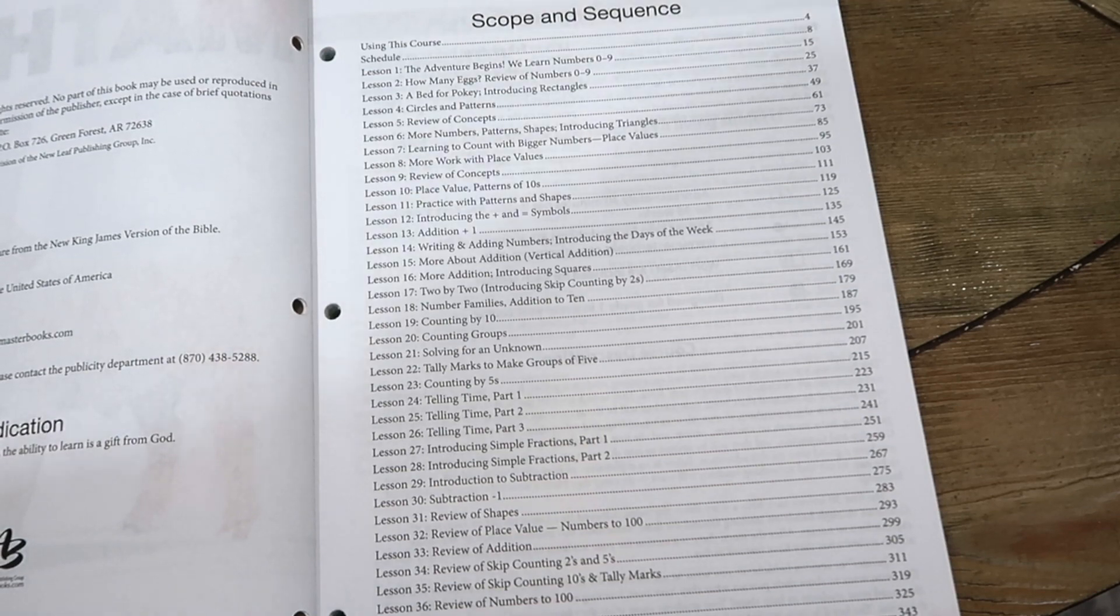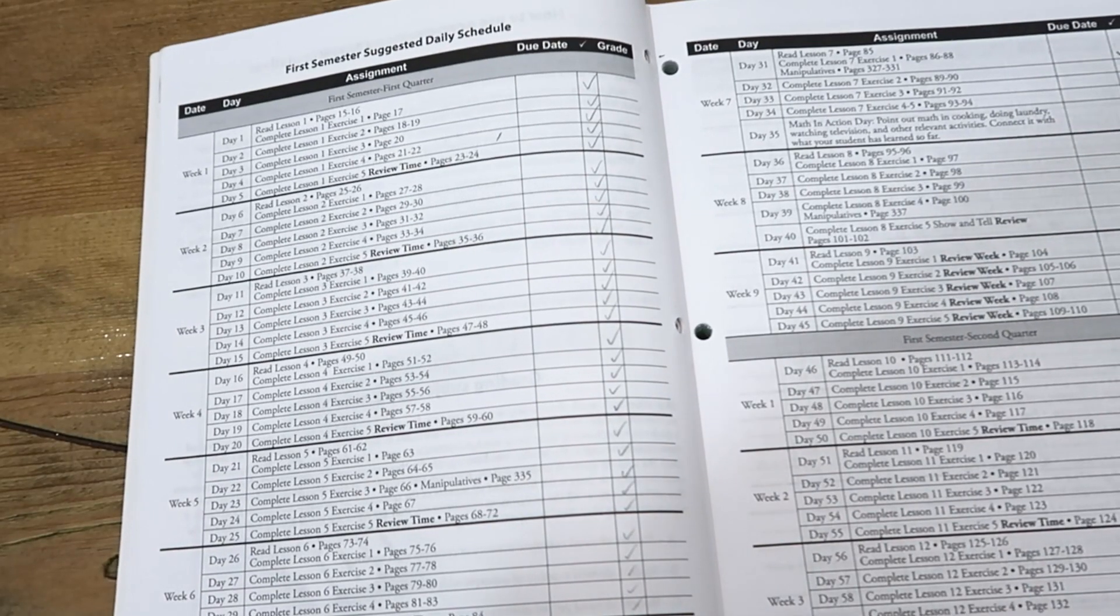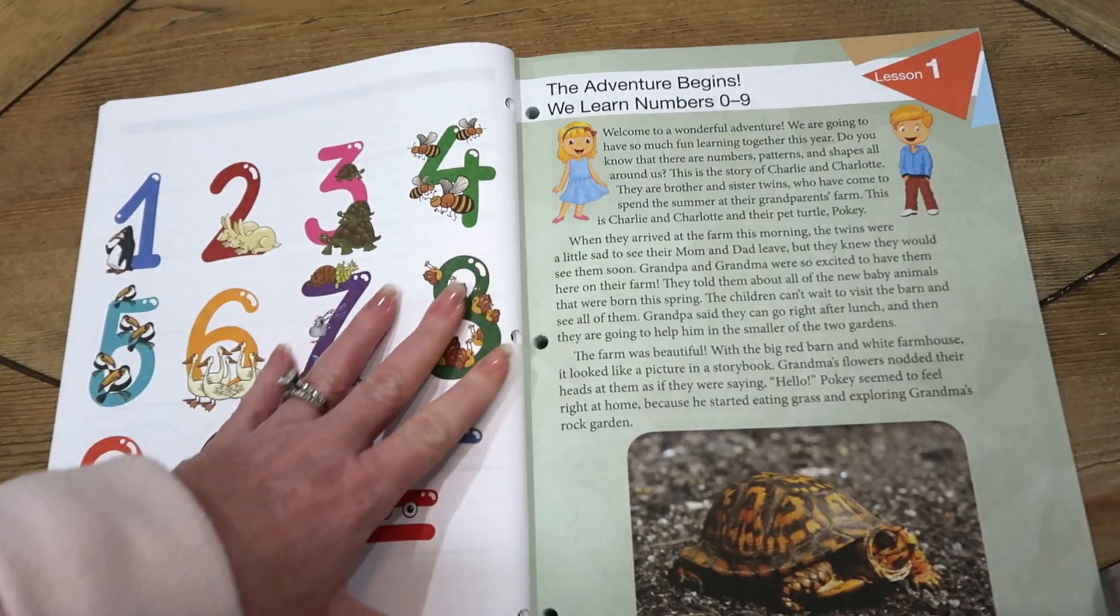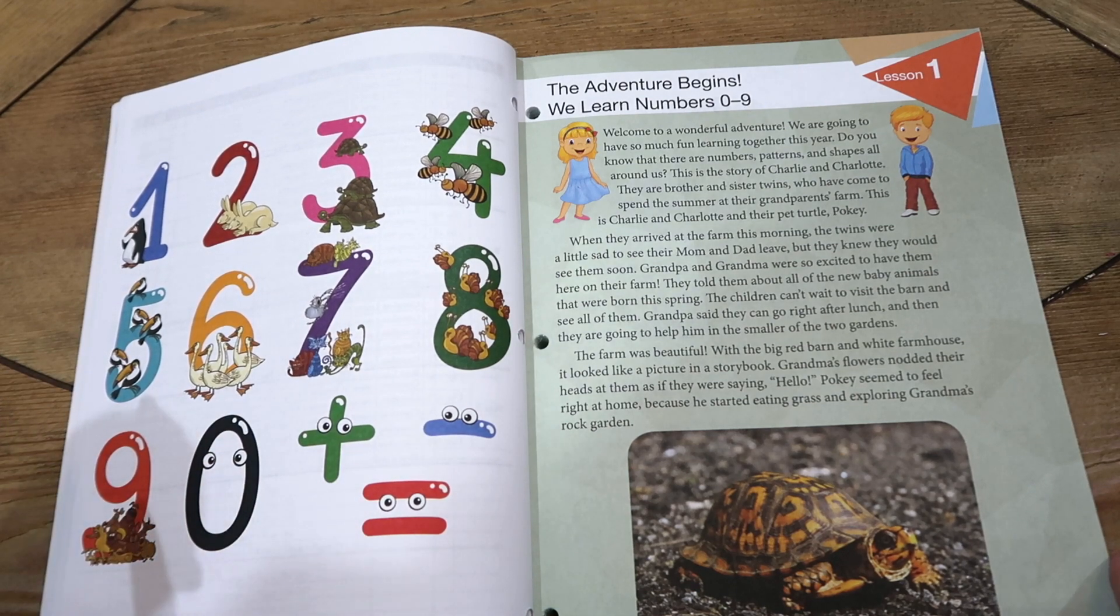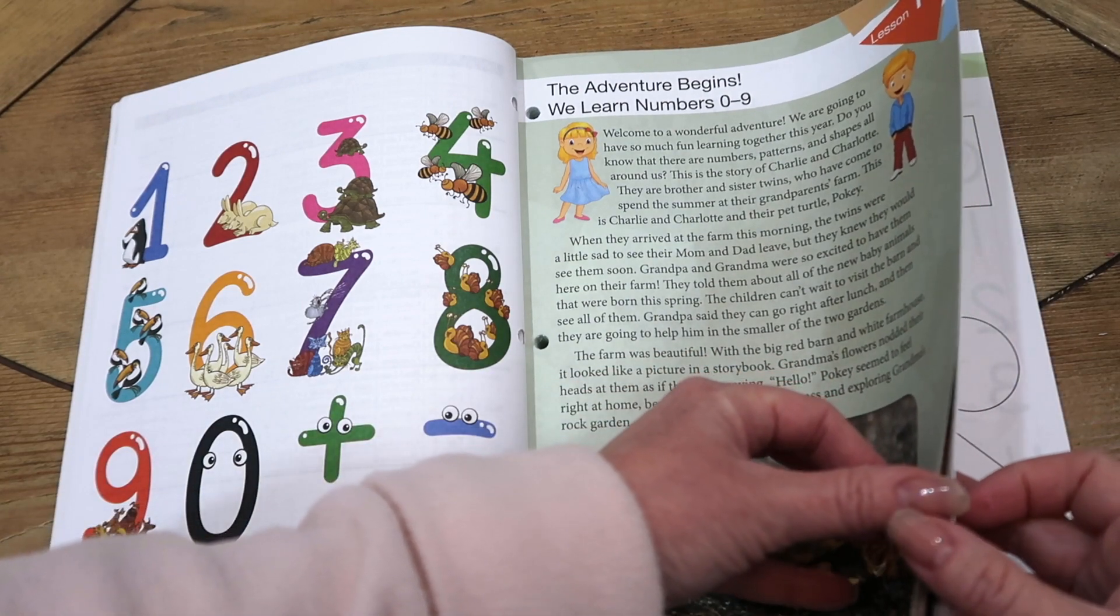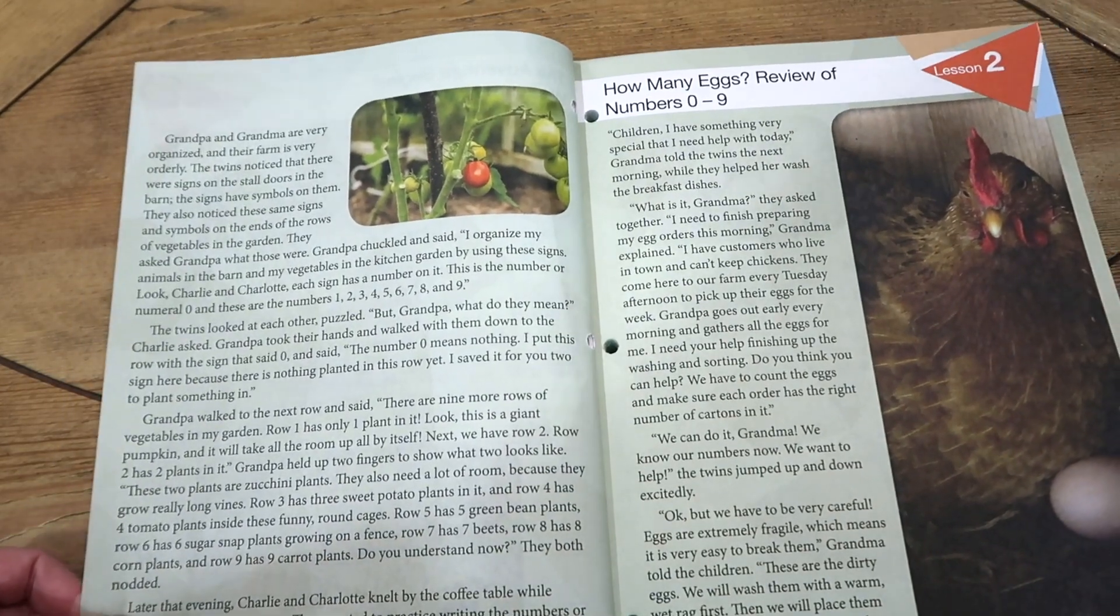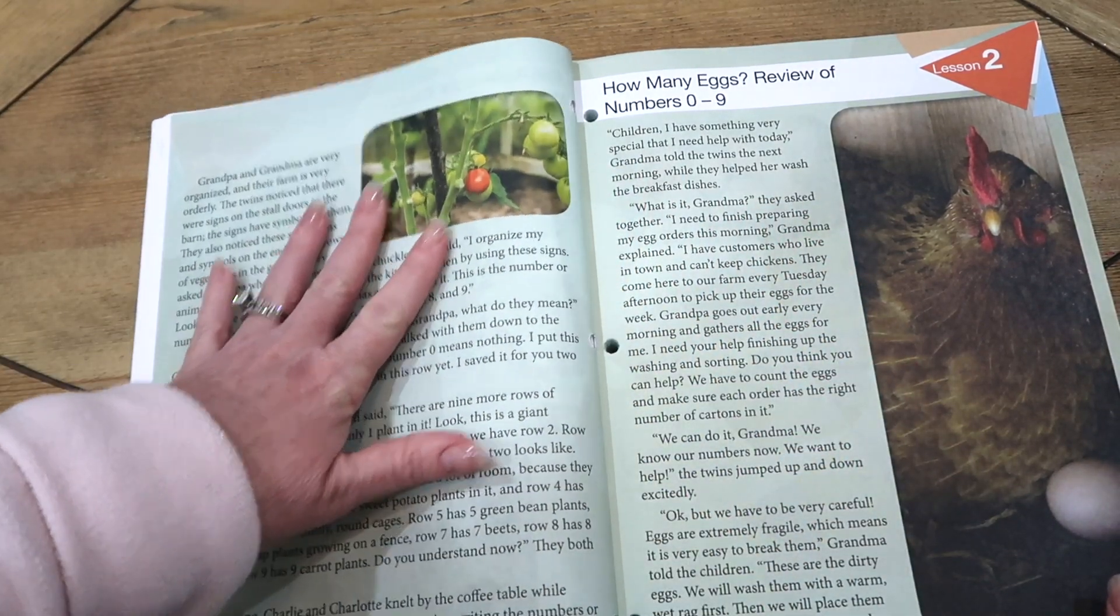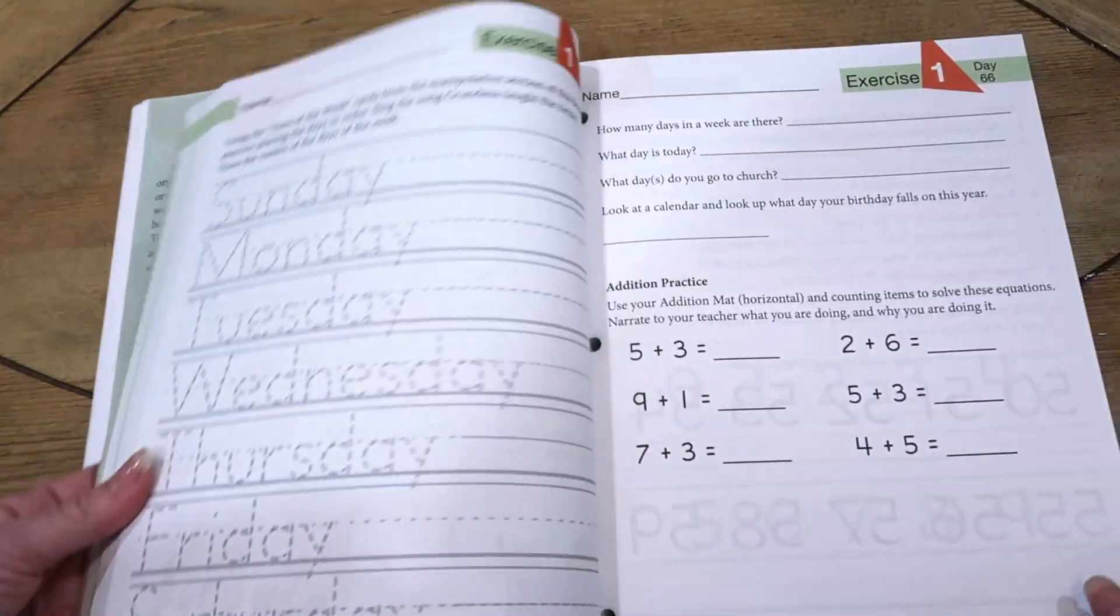That is the scope and sequence, including tally marks and review of numbers to 100. This is the very first lesson. Sophie has passed this, but every lesson will have a story that teaches the lesson. This lesson one is learning numbers 0 through 9. Then there's going to be five worksheets here that you would do. The first day you do the lesson and the first worksheet, and then the rest of the week you do the other worksheets.